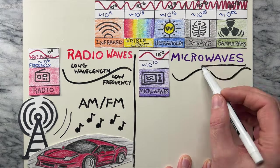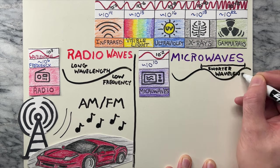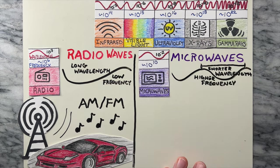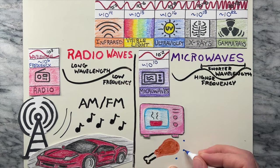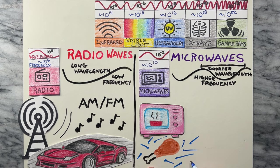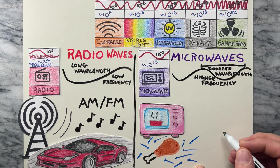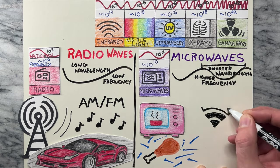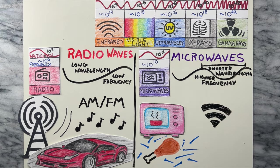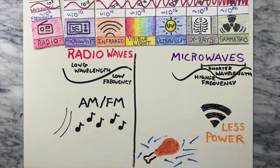Next are microwaves, which have shorter wavelengths and higher frequency than radio waves. Microwaves work to heat food by exciting water molecules within the food. They're also used in wireless communication such as Wi-Fi, but with not as much power as a microwave.